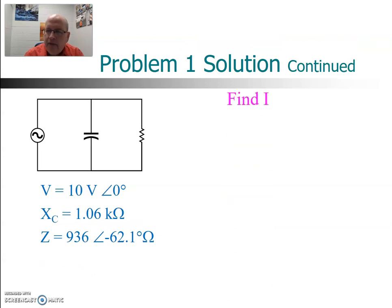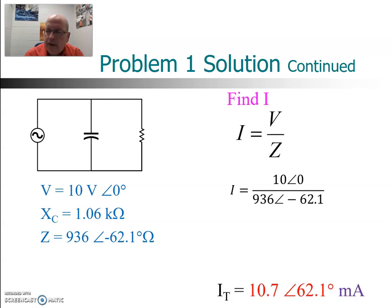Now that we have the total Z we can use Ohm's Law to find the total current. I is equal to V over Z. Z remember is 936 angle negative 62.1. The voltage was 10 angle zero, that was a given. Do the arithmetic and you'll get 10.7 angle 62.1 milliamps.